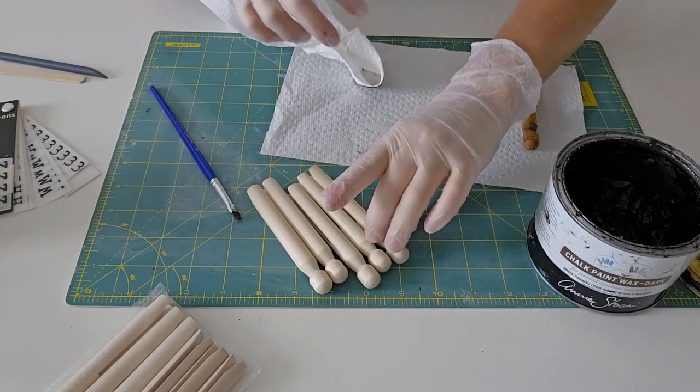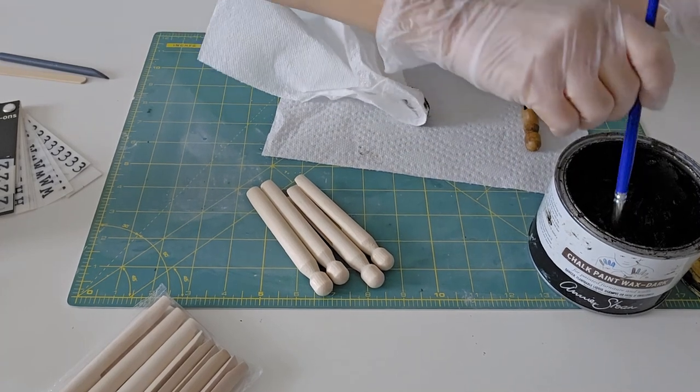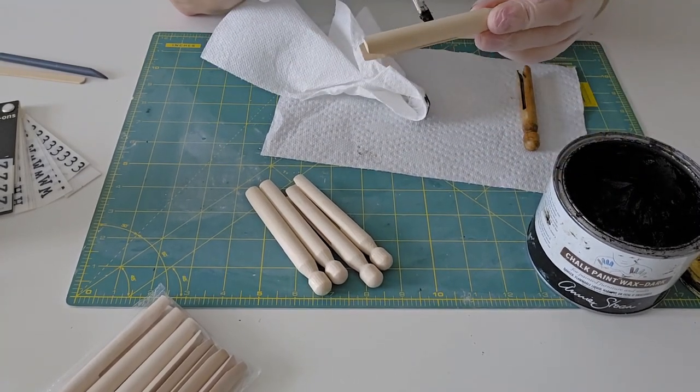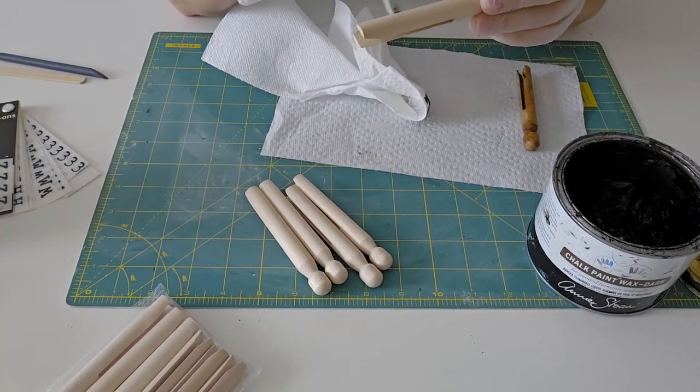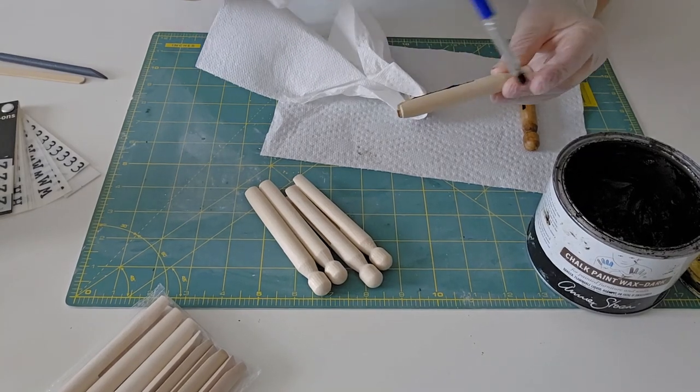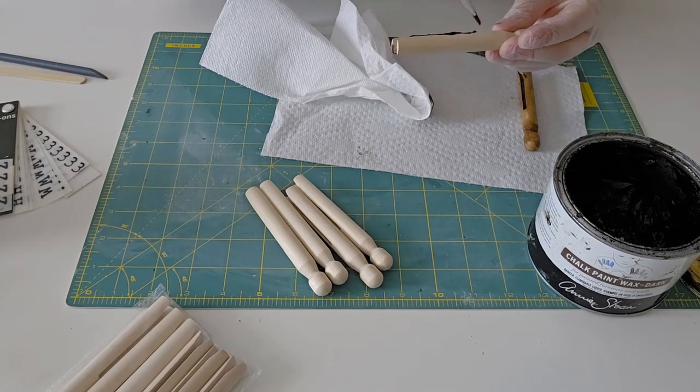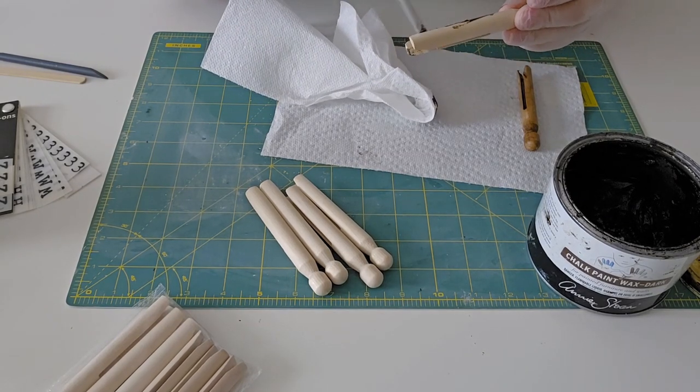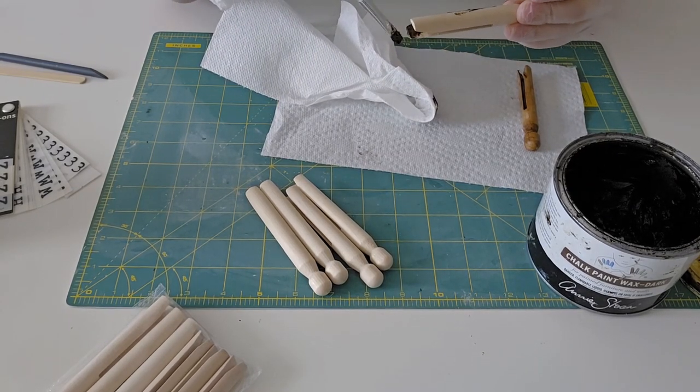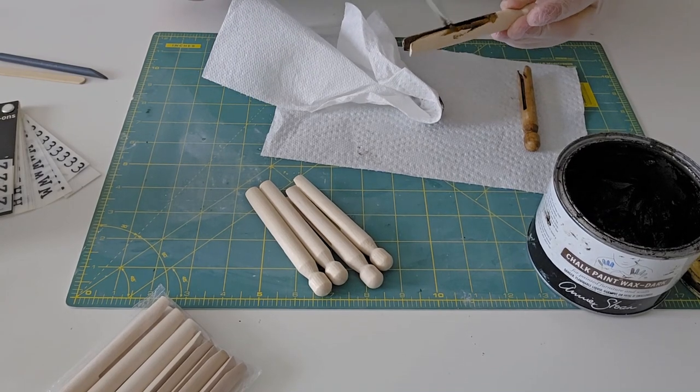Buffing will just remove any excess wax that we have and it'll help give like a little sheen to the piece which I think really adds to the vintage charm of these little clothespins. I have seen these selling actually places like Etsy and Mercari.